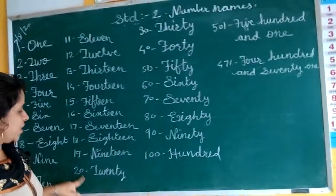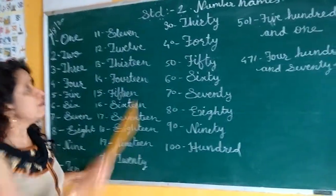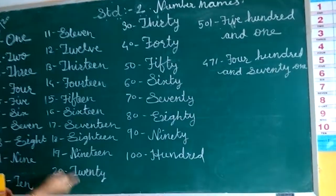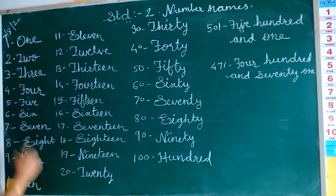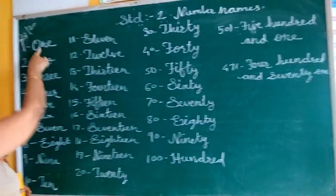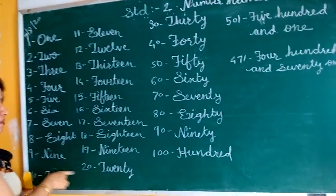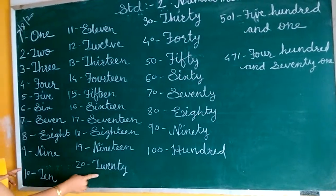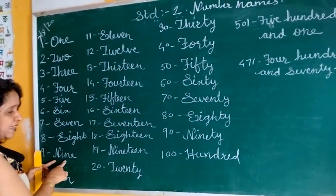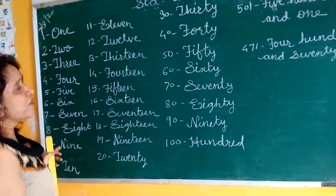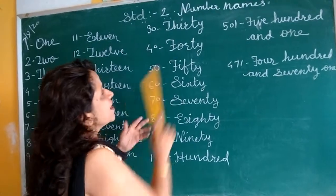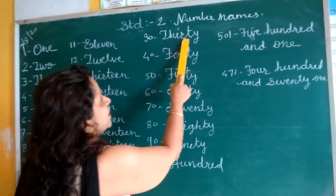After 20 you have to remember 30. Directly you can write 21, 22, 23, because you know the spelling of 20 and then 1 to 10. So you can write 21, 22, 23 like this — 20 up to 29. After 29, which number will come? 30. So T-H-I-R-T-Y, 30.